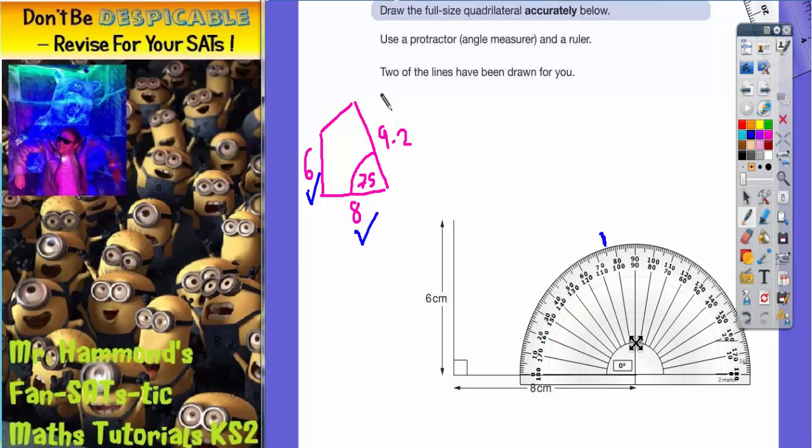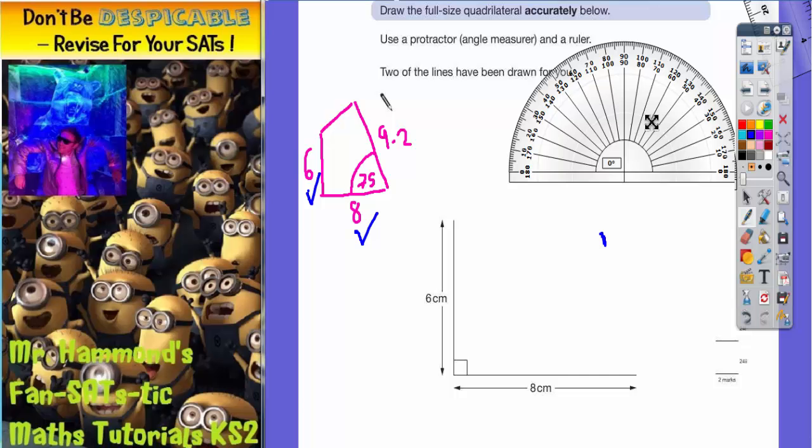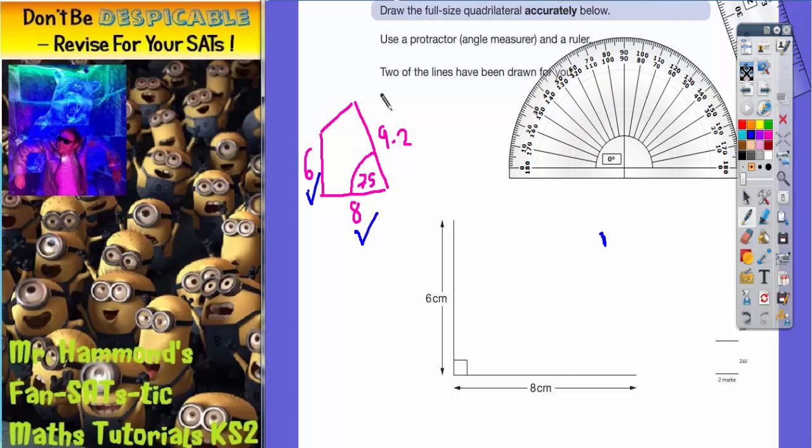It's worth noting that if you go from the other end—10, 20, 30, 40, 50, 60, 70, 75—you'd get a mark, but 75 from that end is actually 105 degrees from the line we're measuring from. We need to be careful to measure from the correct end: 10, 20, 30, 40, 50, 60, 70, 75. Once we've established that, we can take the angle measurer away.